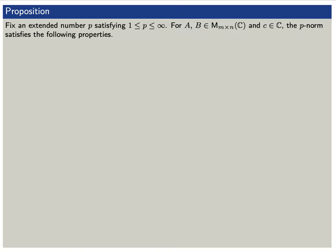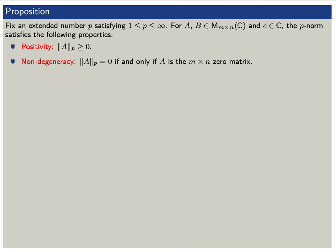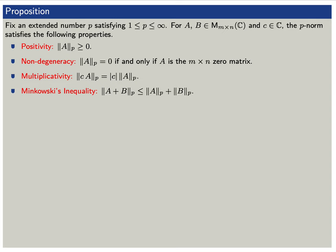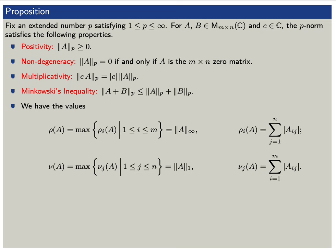This proposition states the key properties of the matrix p-norm. First, the p-norm of a matrix A is always non-negative, and equals zero if and only if A is the zero matrix. For any scalar c, the p-norm of c times A equals the absolute value of c times the p-norm of A. We also have Minkowski's inequality: the p-norm of A plus B is less than or equal to the p-norm of A plus the p-norm of B. Furthermore, the infinity norm of A equals the max row sum, denoted rho of A, and the 1-norm of A equals the max column sum, denoted nu of A.